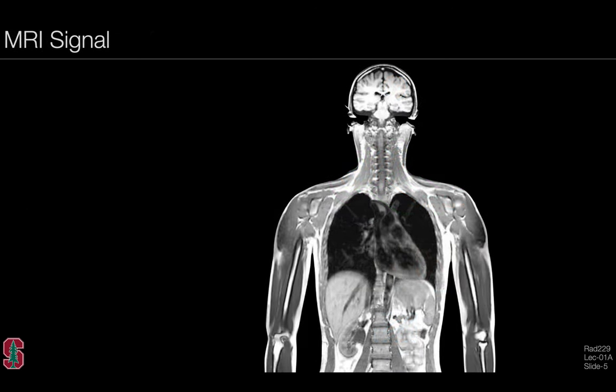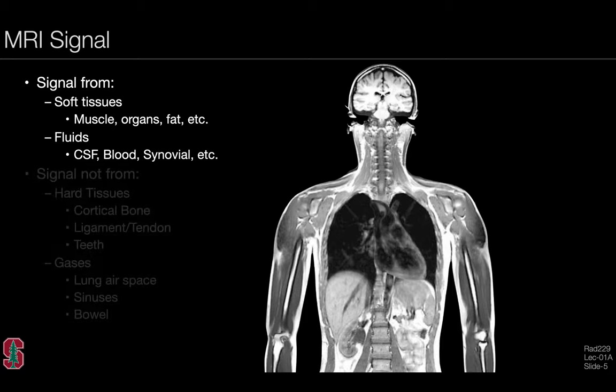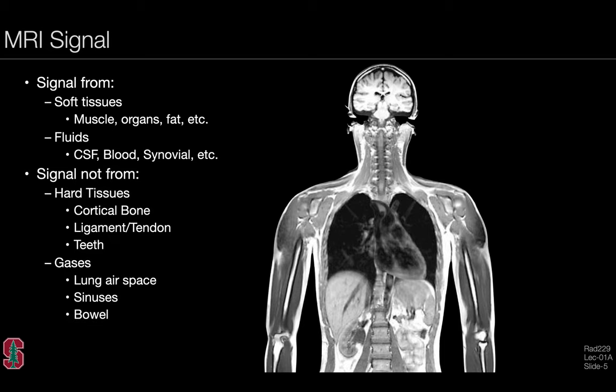It's important when thinking about MR signals to consider where we get signals from and where we don't. We do get signal from soft tissues including muscles, organs, fat, and also fluids like cerebrospinal fluid, blood, and synovial fluids. But we don't get signal from hard tissues like cortical bone, ligament, tendon, and teeth, nor from gas spaces like the lung airspace, the sinuses, and the bowel.